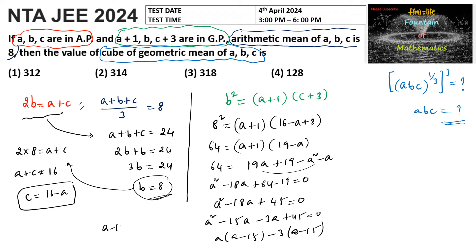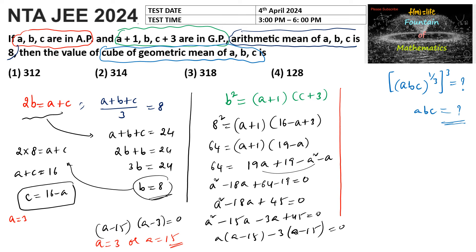So we get (a minus 15) into (a minus 3) equals 0. Therefore, either a is equal to 3 or a is equal to 15. When a equals 3, c equals 16 minus 3, which is 13. When a equals 15, c equals 16 minus 15, which is 1.